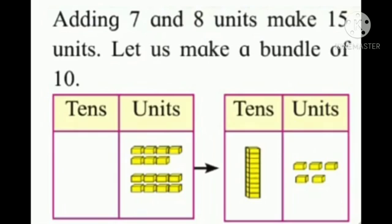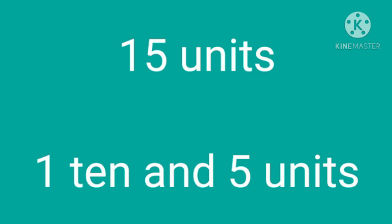Next example. Adding 7 and 8 units makes 15 units. Let us make a bundle of 10. How many singles remain? 5. Which means that 15 units can be written as 1 ten and 5 units.